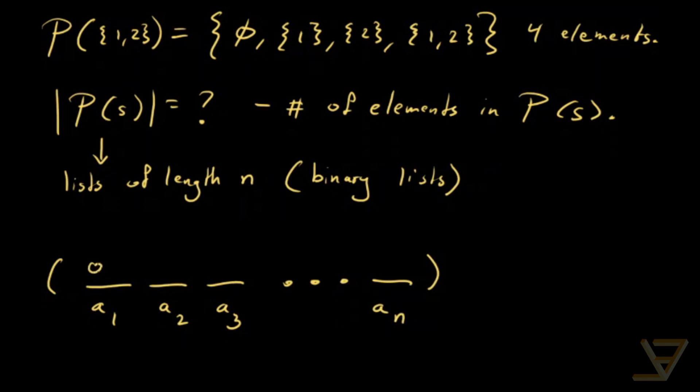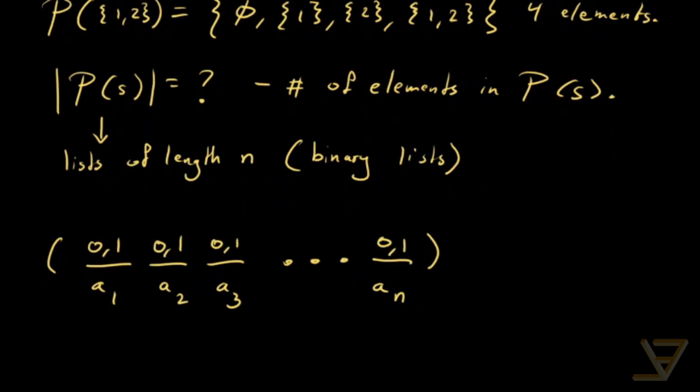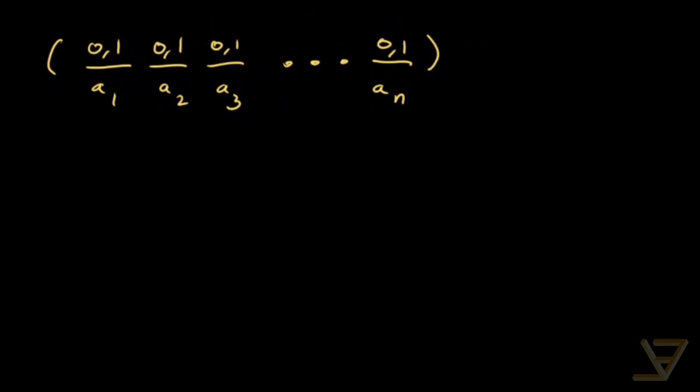And we're going to have 0 or 1 here, 0 or 1 here, 0 or 1 here, all the way through to 0 or 1 here. And we're going to use the standard convention from computer science, which says that 0 means off, or in other words, no. And 1 means on or yes.